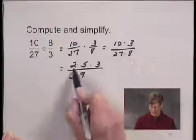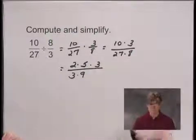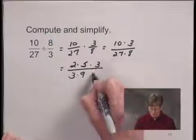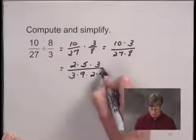I see that 8 has a factor of 2, and there's a factor of 2 in the numerator as well. So I'm going to write 8 as 2 times 4.